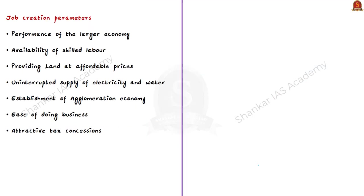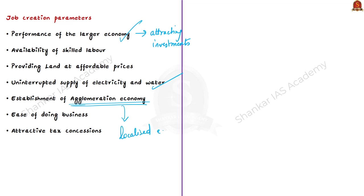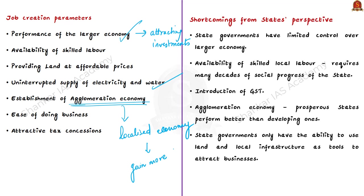Job creation depends on certain parameters: first, the performance of the larger economy, which plays a huge role in attracting investments leading to job creation; second, providing land at affordable prices for infrastructure; third, important amenities such as uninterrupted supply of electricity and water; fourth, agglomeration economy — a localized economy where a large number of companies, services and industries exist in close proximity, benefiting from cost reductions and efficiency gains. Other parameters include ease of doing business and attractive tax concessions. However, states lack many of these due to certain shortcomings.